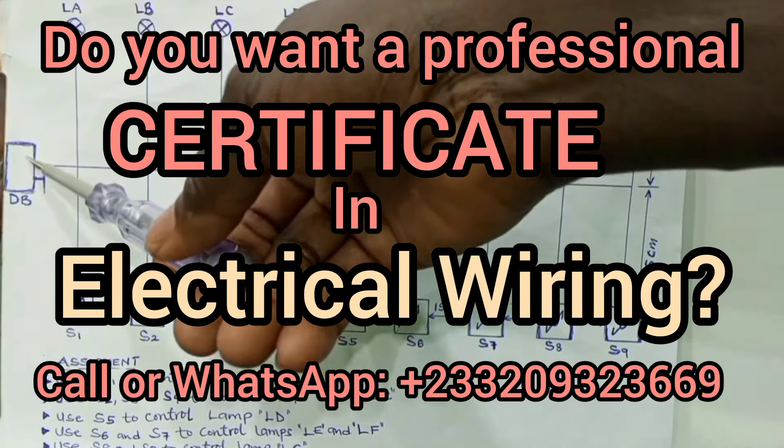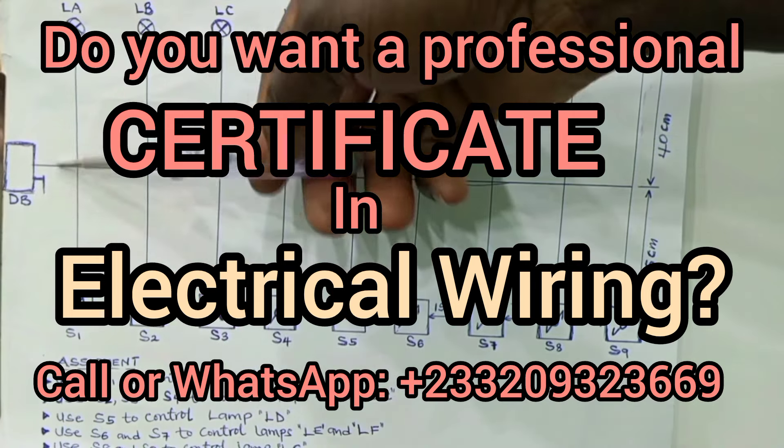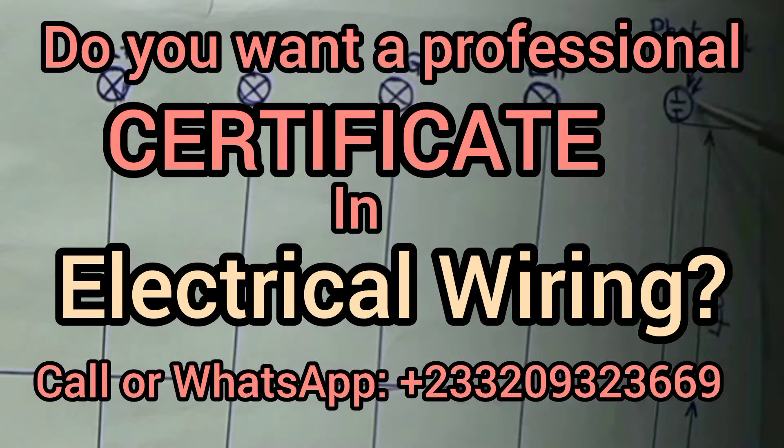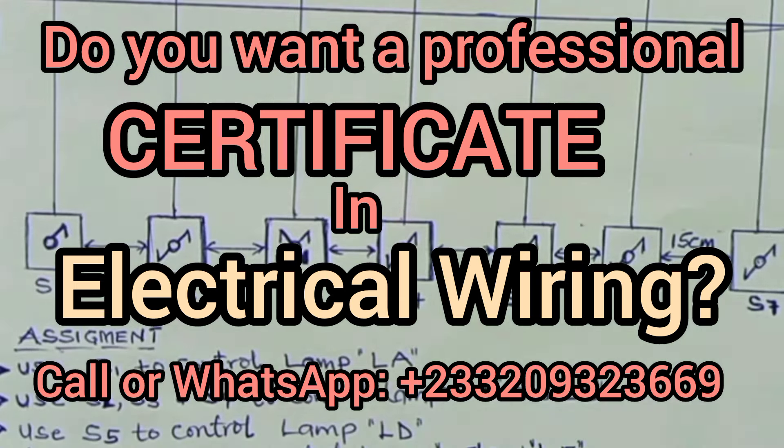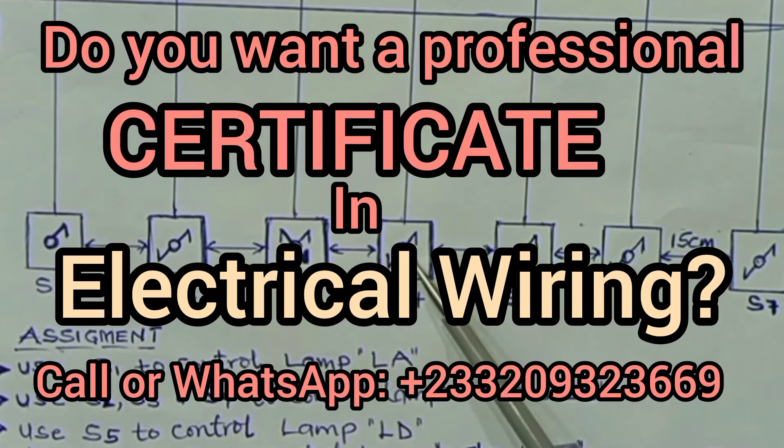But in this particular example, we are to use the photo cell alone. So we will take our input from the consumer unit to the photo cell, and then from the photo cell, it goes to the lamp that it is controlling. In the drawing, if you have two-way here, two-way here, an intermediate switch here, don't change them.